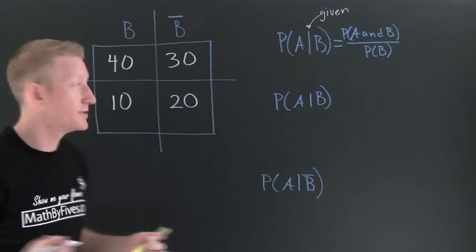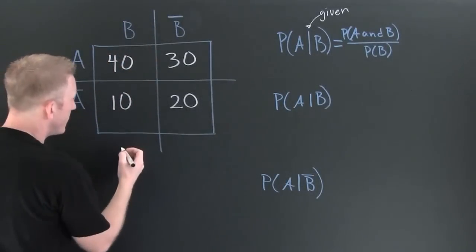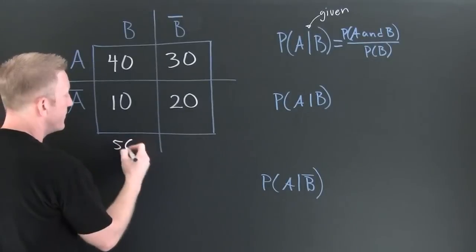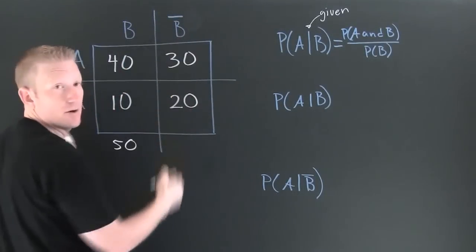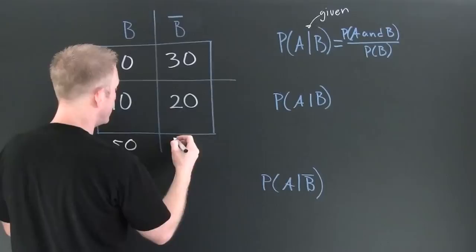We're going to need our margins. We want to know the total number of things in B. This is 50. We want to know the total number of things in not B or B complement. This is 50.